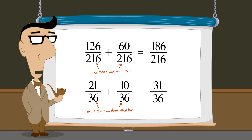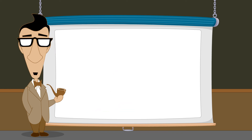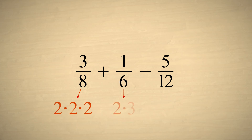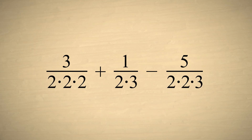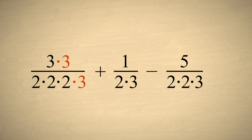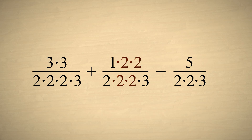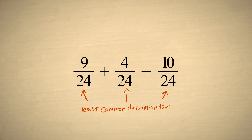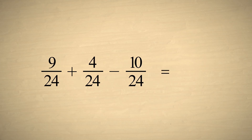The power of using the least common denominator is especially apparent when we add or subtract more than two fractions. For example, let's calculate three-eighths plus one-sixth minus five-twelfths. We first factor each denominator. We can see that to make these denominators the same, we need to add a factor of three to the first denominator, two factors of two to the second denominator, and one factor of two to the third denominator. This gives us a least common denominator of twenty-four, and a total of three twenty-fourths.